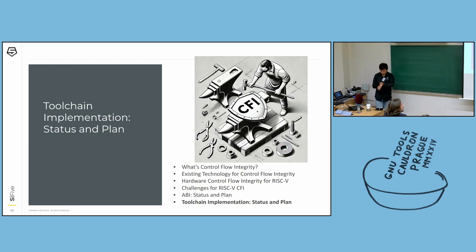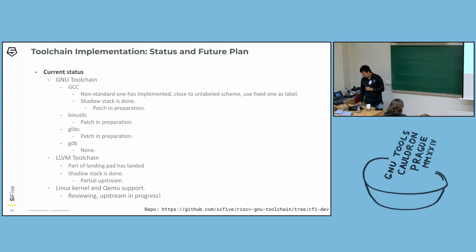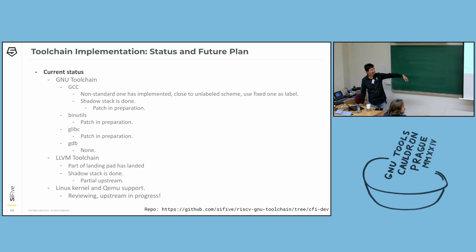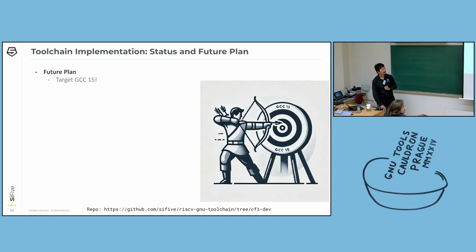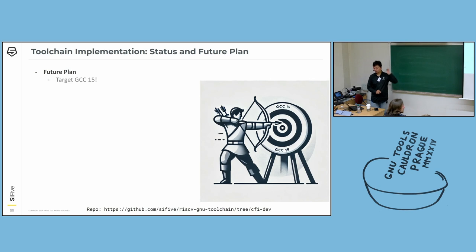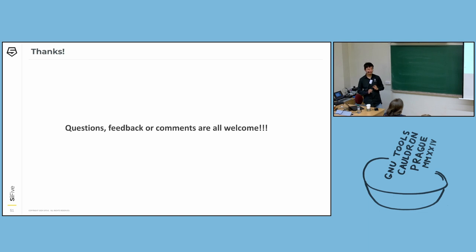Finally a little bit over time — let me quickly cover the status. Currently we have implemented the simplest version in the GNU toolchain and implemented something in Linux and QEMU. Support is under review and upstream is in progress. Our optimistic goal is targeting GCC 15. We hope this can happen next year across the entire software stack — kernel, glibc, and toolchain. If possible, then wait one or two more years and we will have the hardware. That's all my presentation. Thank you. If you have any feedback or questions you can find me later.